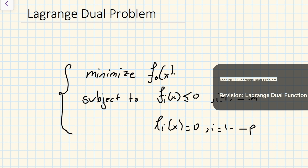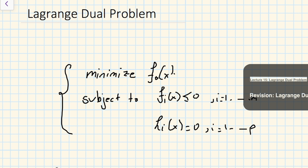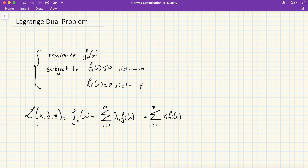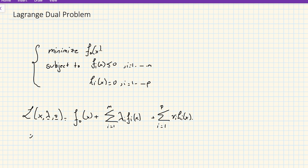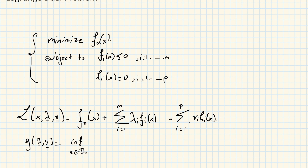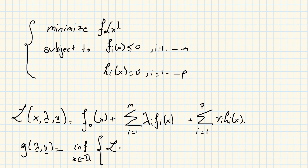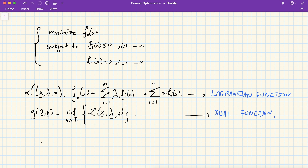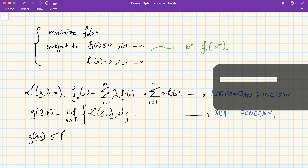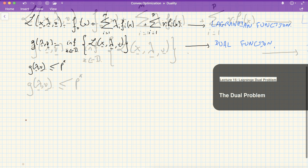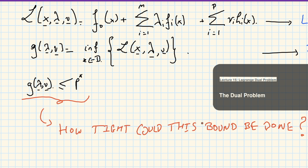As a reminder, a general optimization problem has a corresponding Lagrangian function discussed in the previous lecture. Its dual function, or Lagrangian dual function, is the infimum over x spanning the domain of the associated Lagrangian. An important result from the previous lecture is that the optimal value p-star is lower bounded by the dual function. An important question is: how tight can we make this bound?